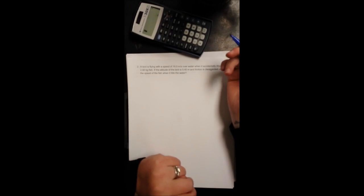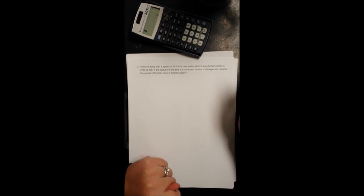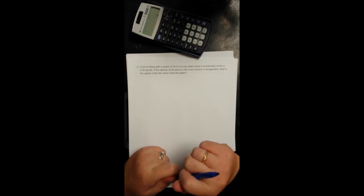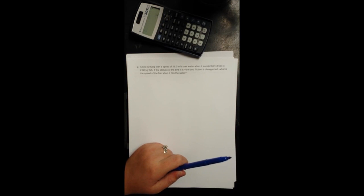In this problem we've got a bird flying with a speed of 18 meters per second over water when it accidentally drops a 2 kilogram fish. As the altitude of the bird is 5.4 meters and friction is disregarded, what is the speed of the fish when it hits the water?